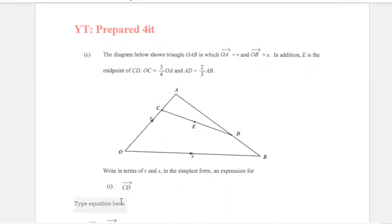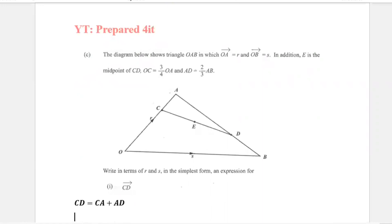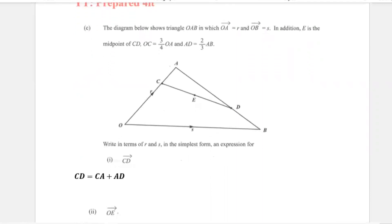So CD equals CA plus AD. But we need to find AD, and the only information given is that AD equals 2 thirds of AB. So first we need to find AB. AB equals AO plus OB.